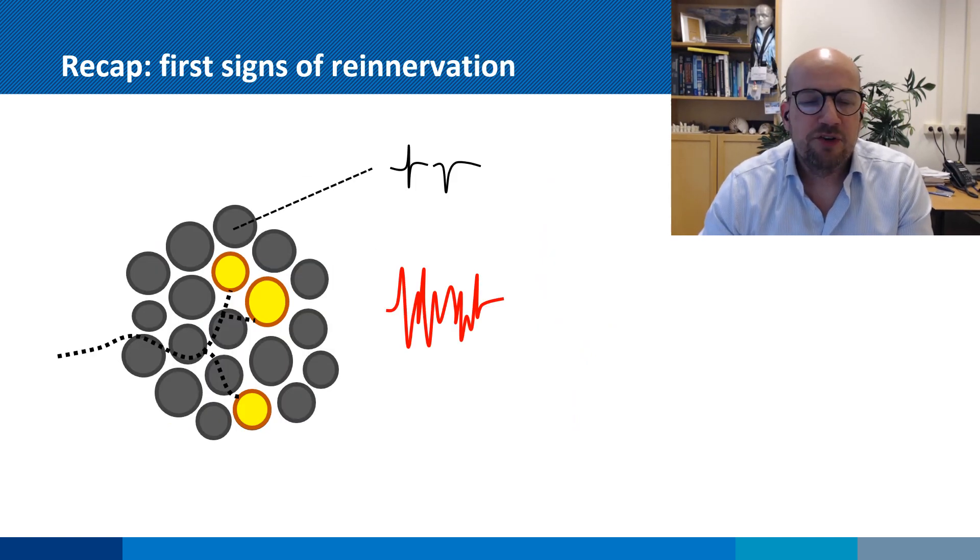In cases of severe nerve injury, all muscle fibers have lost contact with their axon and will start producing spontaneous muscle fiber activity, fibrillation potentials and positive sharp waves. In initial stages after nerve injury, this is the only signal you will see in your EMG.